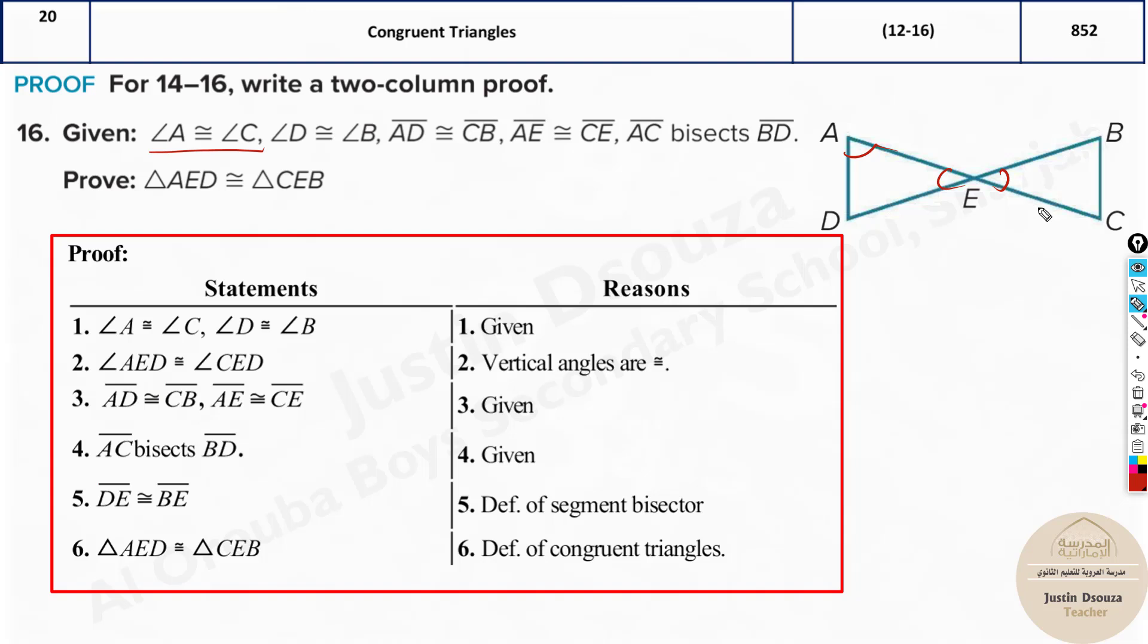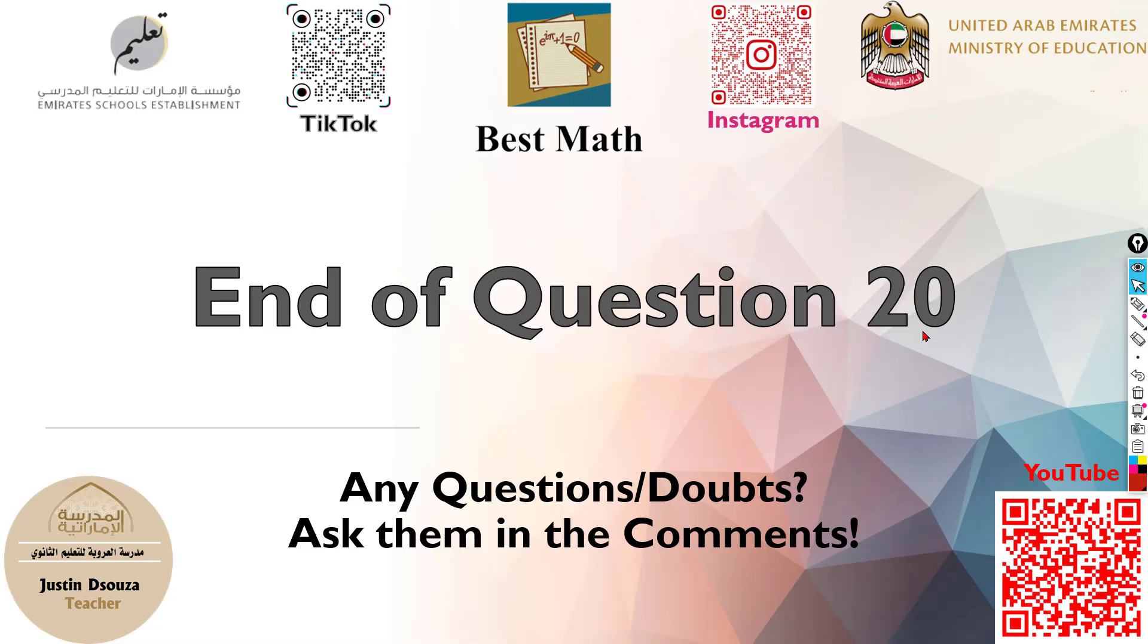And about the sides, AD equals CB, AE equals CE. They have told AC is bisecting the line BD. Whenever there is a line being bisected, means imagine this is a 10 centimeter line. You bisect it, it will clearly be half, five centimeter, five centimeter equal part. So that means this and this is equal. So that is segment bisector definition. Therefore, all the sides and all the angles are equal. Therefore, the triangles are congruent to each other.